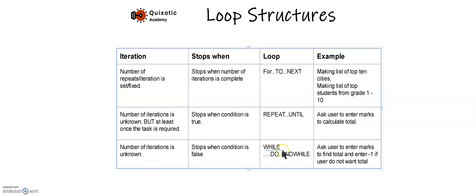The next type of loop is the while loop: while the condition is true, do the iteration, and end while if the condition is not true. This loop is used when the number of iterations is unknown, like the repeat until loop. But here, the program is not required to repeat any instruction even once. The loop will stop when the condition is false. We will take a similar example — asking the user to enter marks to find the total, entering minus one if they do not want to continue.